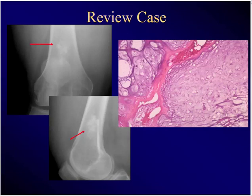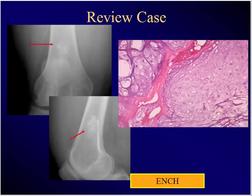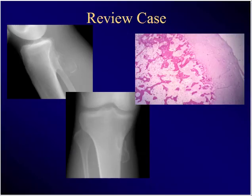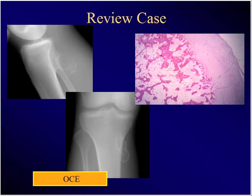Serendipitous find, young person, this radiograph, this histopath — what's the diagnosis? Enchondroma. What's this next one? No history needed. It's an OC — osteochondroma. Is it parosteal? No. Is it MOT? No. OC. That was too easy.